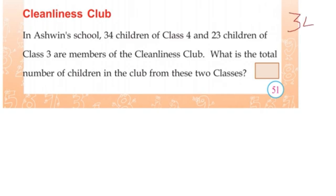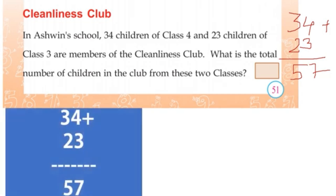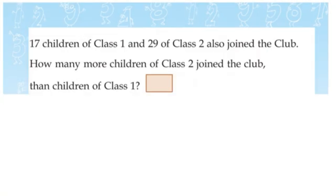34 plus 23: 4 plus 3 is 7, 3 plus 2 is 5. Total 57 children. Number of children in class 2: 29. Next one — 17 children of class 1. 29 of class 2 join the club.